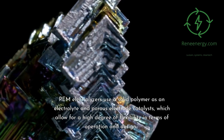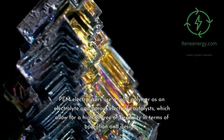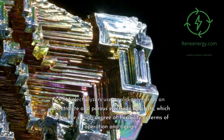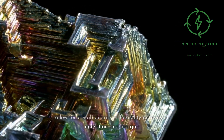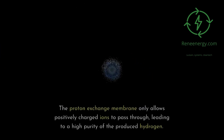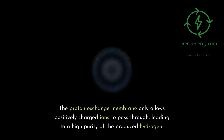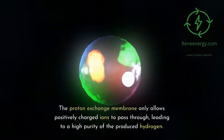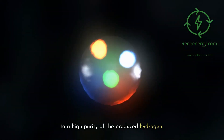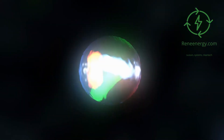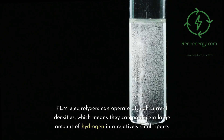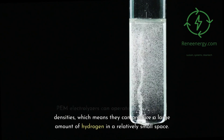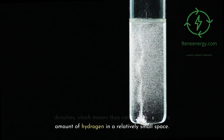PEM electrolyzers use a solid polymer as an electrolyte and porous electrode catalysts, which allow for a high degree of flexibility in terms of operation and design. The proton exchange membrane only allows positively charged ions to pass through, leading to a high purity of the produced hydrogen. PEM electrolyzers can operate at high current densities, meaning they can produce a large amount of hydrogen in a relatively small space.